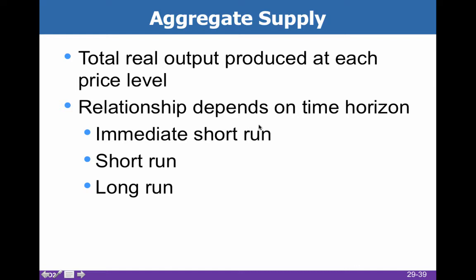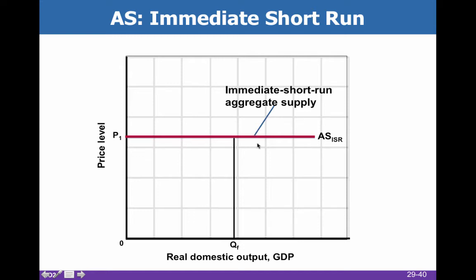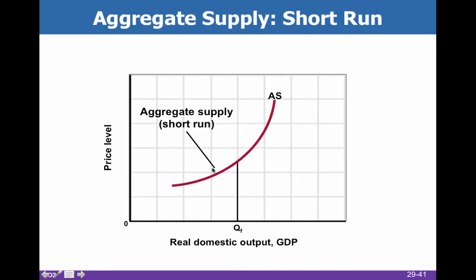So far in this chapter we've discussed aggregate demand, but there's also aggregate supply, which has a lot of parallels to supply in the product market. This is total real output produced at each price level, and the relationship depends on the time horizon — the immediate short run, the short run, and the long run. In the immediate short run, our supply curve is perfectly horizontal because prices are pretty sticky. Price doesn't change; we just manage inventory, either selling out or building it up.